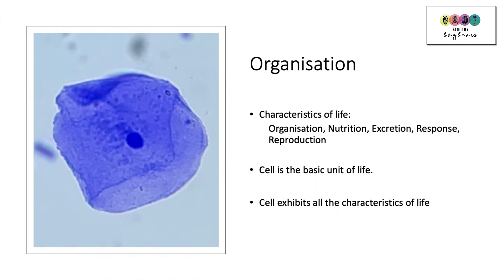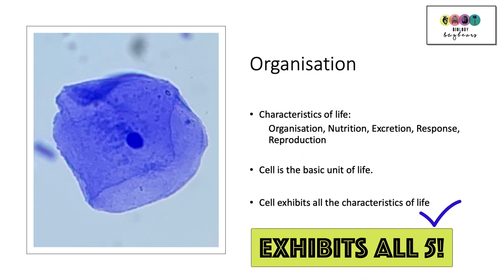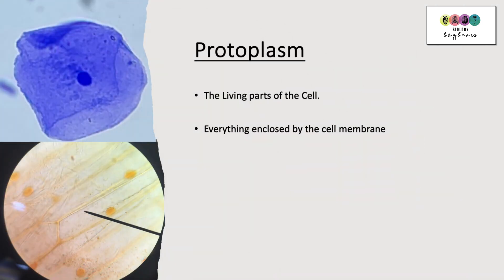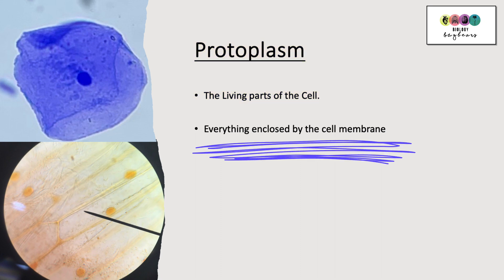This chapter is very important. Cells are fundamental to studying biology. Remember when we studied the characteristics of life, organization was the first characteristic. So remember that the cell is the basic unit of life and a cell can exhibit and does exhibit all five of those characteristics. An important term to know and to learn is protoplasm. It means the living parts of the cell, everything enclosed by the cell membrane. So write down protoplasm, it could be asked.